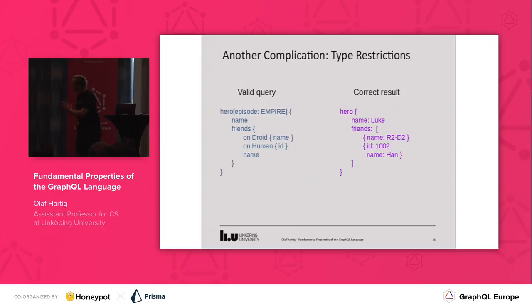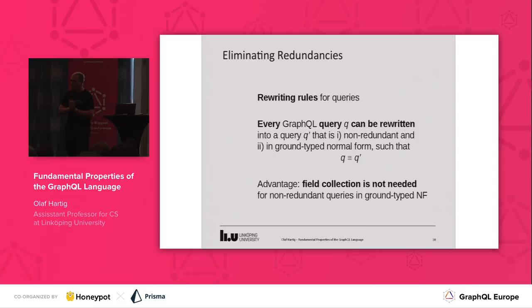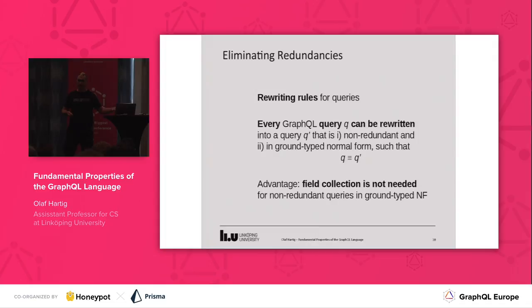By knowing that friends in this particular case can only be droids or humans, we can get rid of this problem by moving the separate name field into the human type. This gives us another valid query which produces exactly the same result, and we call these queries ground-typed. The good thing is we prove some rewriting rules based on which you can take any arbitrary GraphQL query, apply these rewriting rules, and end up with another query Q' that is non-redundant, in ground-typed normal form, and semantically equivalent to the query you started from. The advantage is that you don't have to do field collection anymore for these queries.